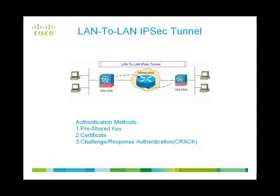The network diagram displayed shows the VPN tunnel formed between the two ASAs. There are three authentication methods used in the VPN tunnel creation process. The authentication methods are using the pre-shared key, using the certificate, or by using the challenge or response authentication, commonly known as CRACK.